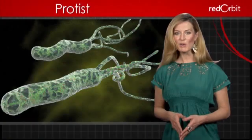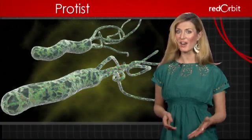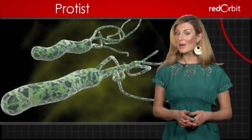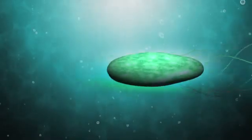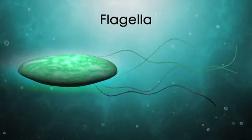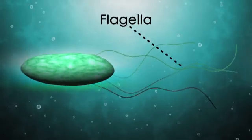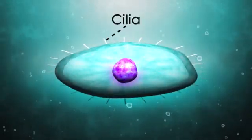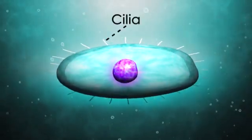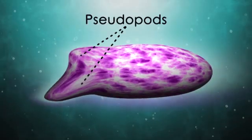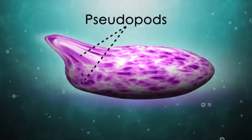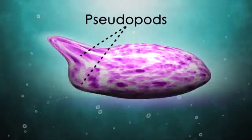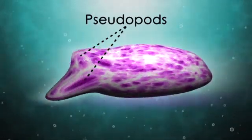Most protists live in water, or very wet environments, and most are able to move. Some swim via whip-like projections called flagella. Some glide using hair-like extensions called cilia, and some pull themselves along using pseudopods, false feet made of cytoplasm.